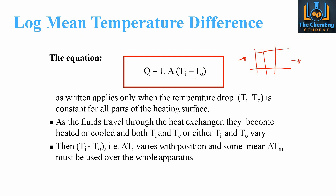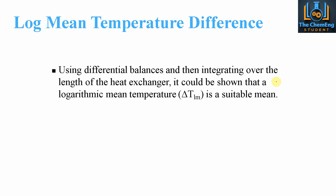Delta T is usually just Ti minus T0. However, we're going to use delta Tm, which stands for delta T log mean — it sometimes can have an Lm as well. This applies over the entire apparatus of the system. We take the inlet conditions and the outlet conditions and take a log mean, so it's an average of the difference. We use the differential balance and integrate over the entire length of the heat exchanger to show that we have a logarithmic mean temperature with a suitable mean value.